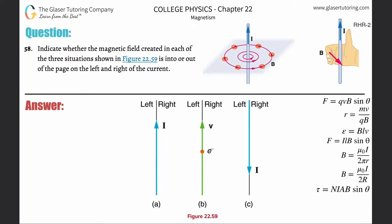Number 58: Indicate whether the magnetic field created in each of the three situations shown in Figure 22.59 is into or out of the page on the left and right of the current. Alright, so we're basically just applying right hand rule number two.